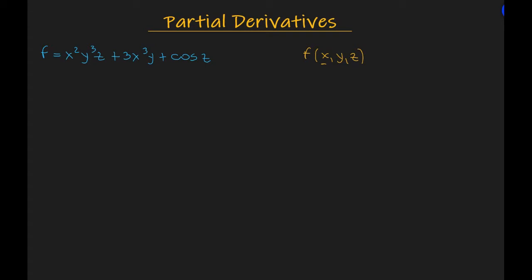The partial derivative is computed by taking the first derivative of the function f with respect to x while treating all other variables as constants — in this example, y and z.